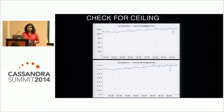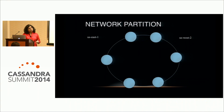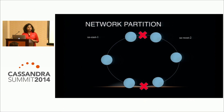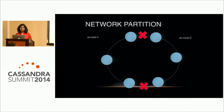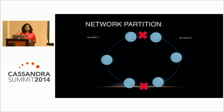For network partition testing, we updated IP tables so nodes could not communicate on the SSL storage port across regions, mimicking a region outage. Each region only saw its local ring with all other-region nodes marked down. We discovered applications using quorum would fail miserably, because quorum in a multi-regional cluster spans across both regions — those calls will fail when the other region is unreachable.